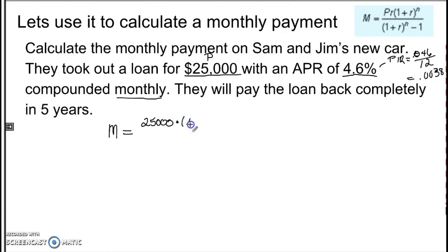So we'll put that in there. And then 1 plus our rate again, 0.0038, being raised to the N. Remember N stands for the number of payments. We know it is monthly for five years. So our number of payments would be 5 times 12, or 60.